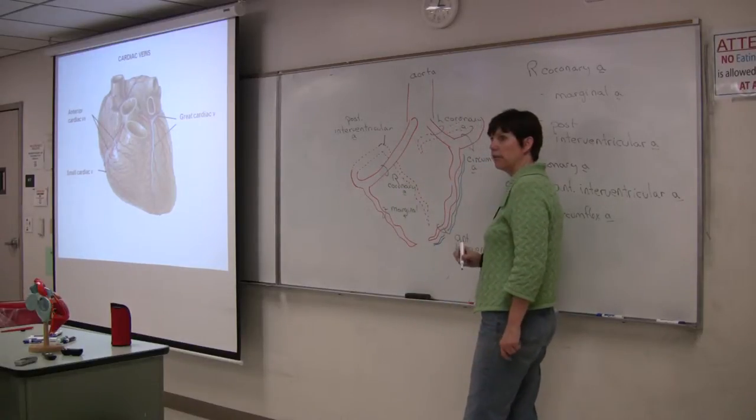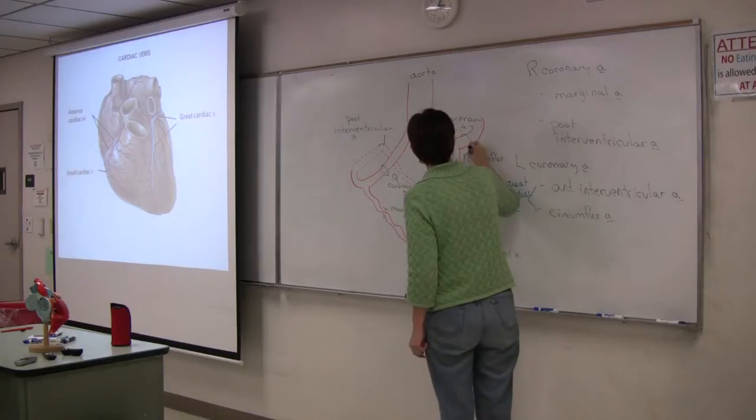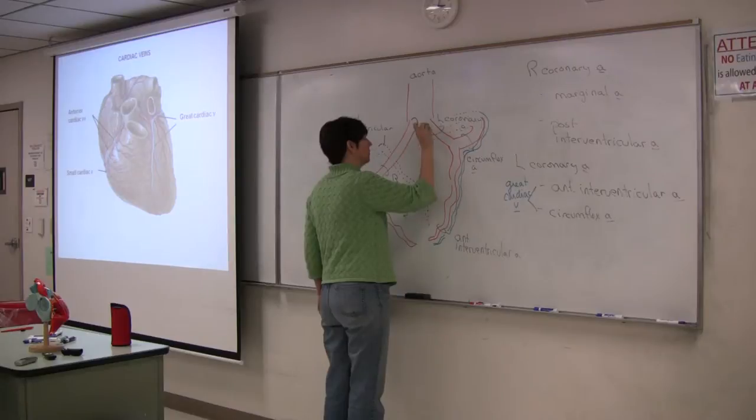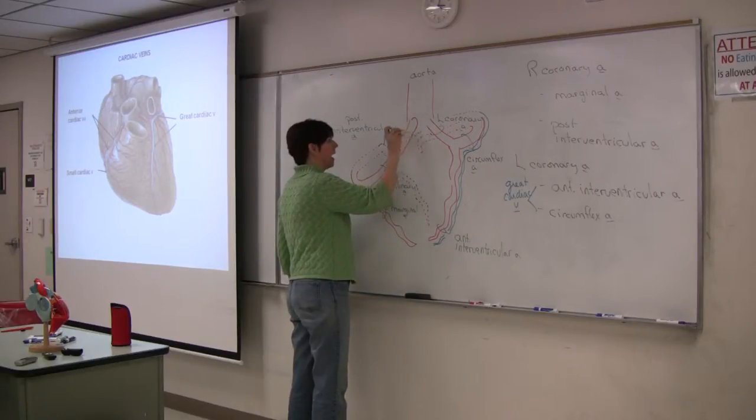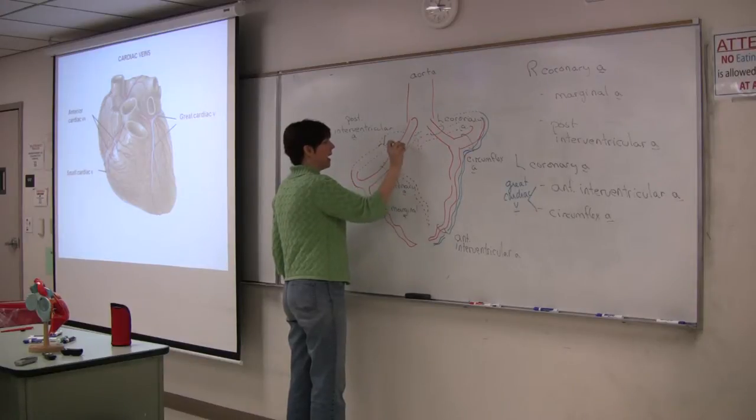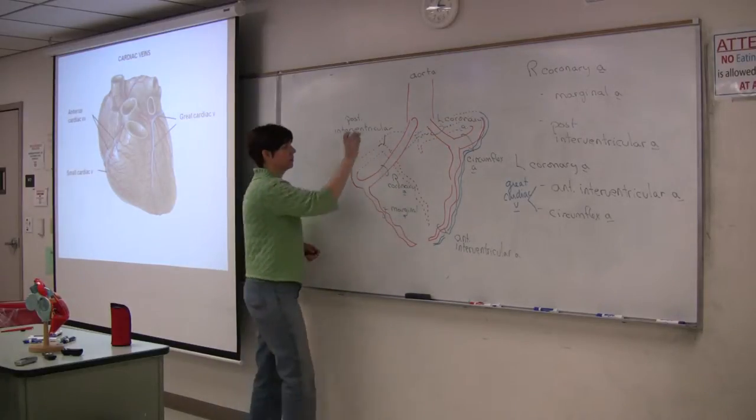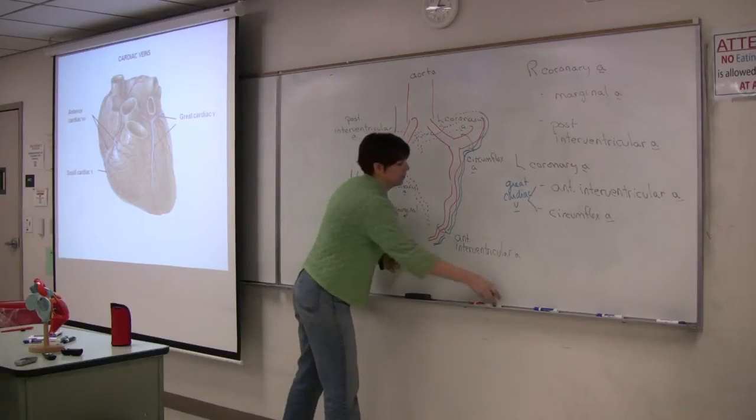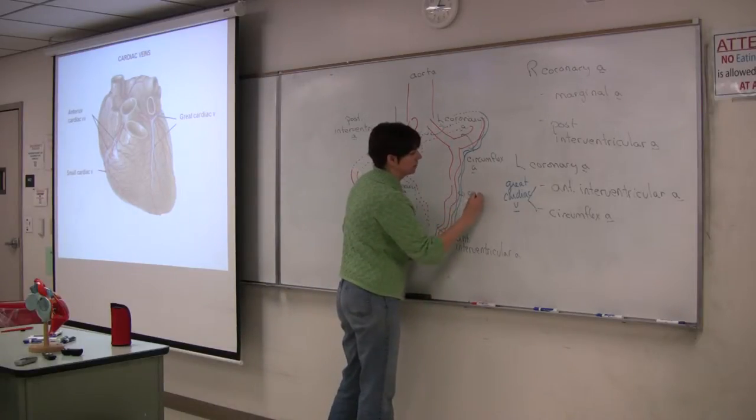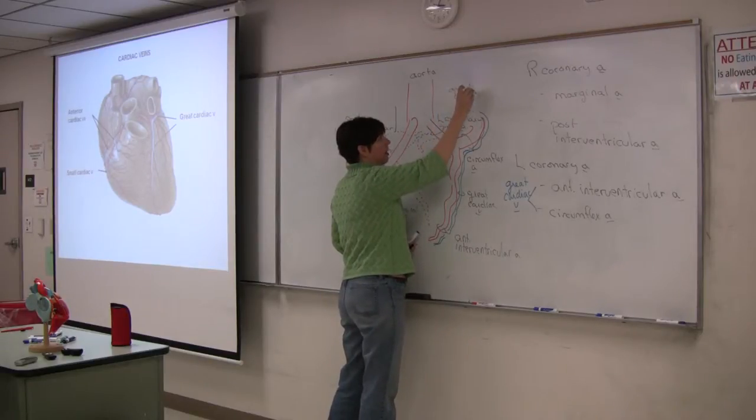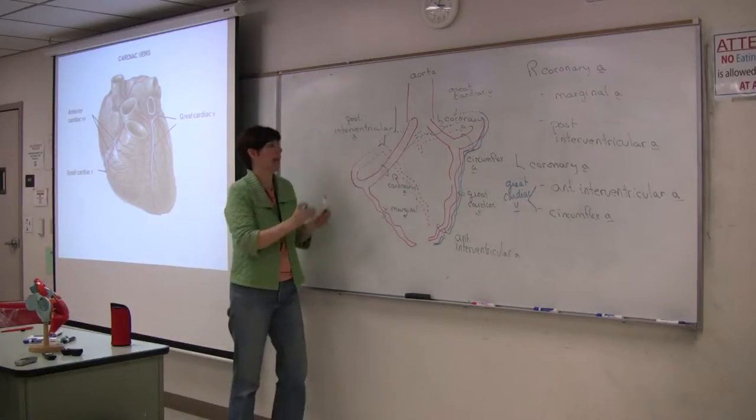So we see it in the interventricular sulcus. So it's traveling with the anterior interventricular artery there, and then it's going to make this turn, and it's going to travel with the circumflex artery posteriorly. And in the back, it's going to dilate to form the coronary sinus. So cardiac vein, great cardiac vein there, still great cardiac vein with the circumflex artery, and it's going to dilate to form the coronary sinus.